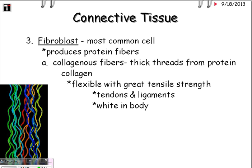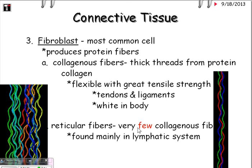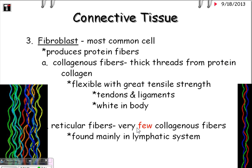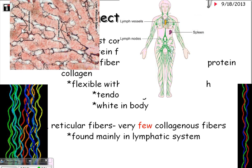When seen in the body rather than on a microscope slide, collagenous fibers are white and very strong. The next type is reticular fibers — these are just a few of the collagenous fibers, so instead of a large bundle, you only have two or three. These are found mainly in the lymphatic system, including the lymph nodes, the spleen, and the lymph vessels.